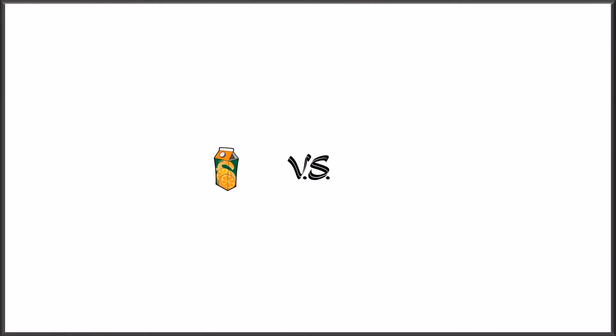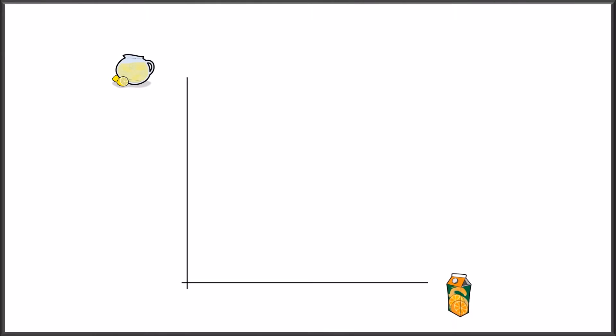Let's continue to use orange juice and lemonade as examples. First, we have to choose which product goes on which axis. I chose lemonade for the Y axis and orange juice for the X axis. The result of our analysis will not be affected by this choice. Keep in mind that the axes represent quantities of both products; they do not directly show their prices. Now, let's assume that this individual has a budget of $24, the price of orange juice is $6, and the price of lemonade is $3.